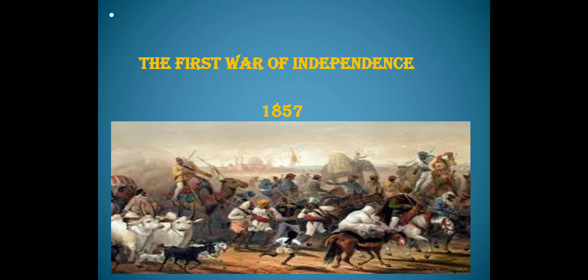They appealed to the aged Mughal emperor Bahadur Shah — an emperor without authority — to take over the leadership of the revolt. He was proclaimed the Shenshai Hindustan. In 1857, the sepoys captured the city of Delhi, killed many Englishmen, and ransacked many public offices.